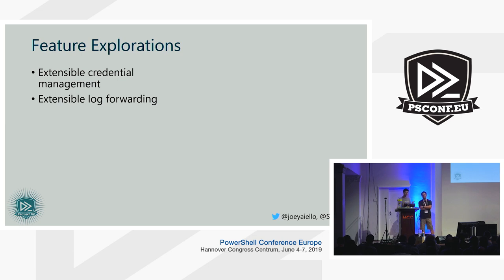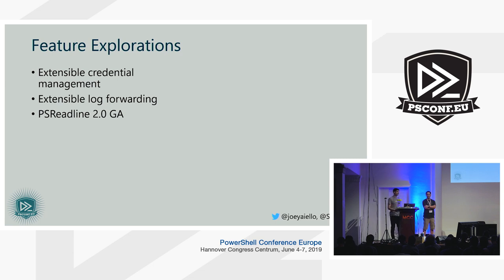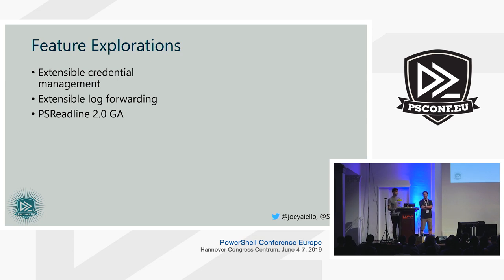With log forwarding we could do heuristic analysis for security reasons or throw alerts to users based on certain behaviors. RFCs are coming soon for both of those. PSReadLine 2.0 — we want to GA this thing. We've been working on it as a beta for a very long time. A lot of these have been accessibility fixes, but we've also been making it more compatible with a wider range of terminal emulators across platforms. We want to get this up to GA quality and ship it as part of PowerShell 7.